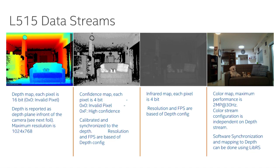We can also output the IR intensity stream, which maps perfectly with depth. And as I mentioned, the camera has a 2 megapixel color camera, and we calibrate the camera in the factory so that the color image maps on top of the depth.